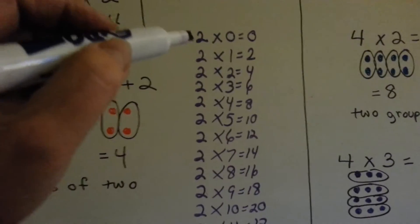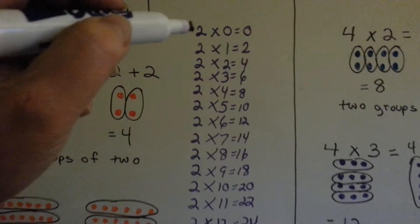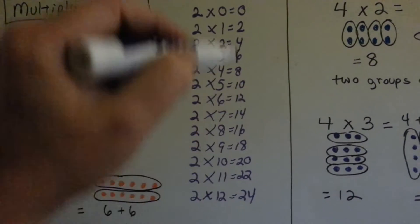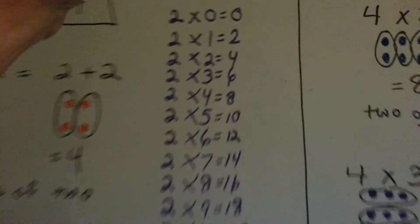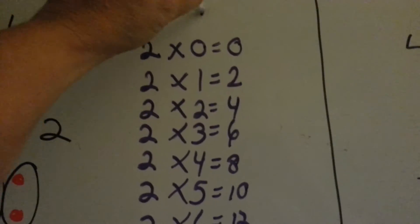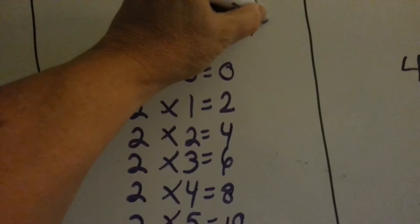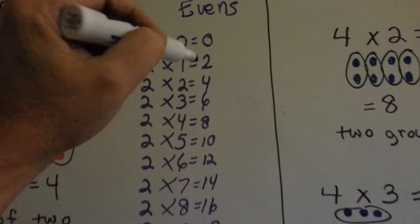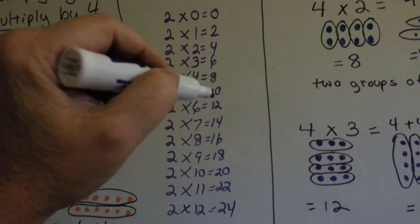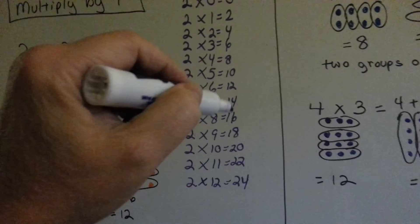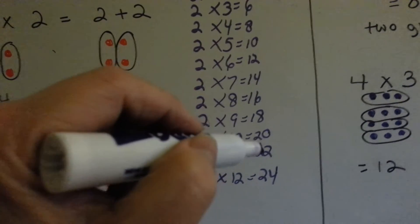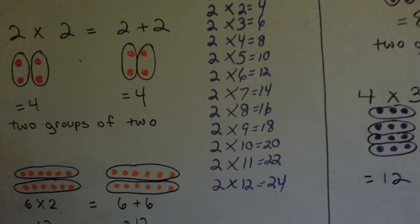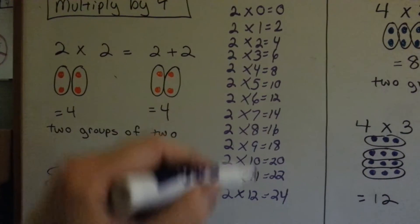This is the 2 times table. All of the answers are evens — they're not odds. They're all evens: 0, 2, 4, 6, 8, 10, 12, 14, 16, 18, 20, 22, and 24. That's skip counting by twos.